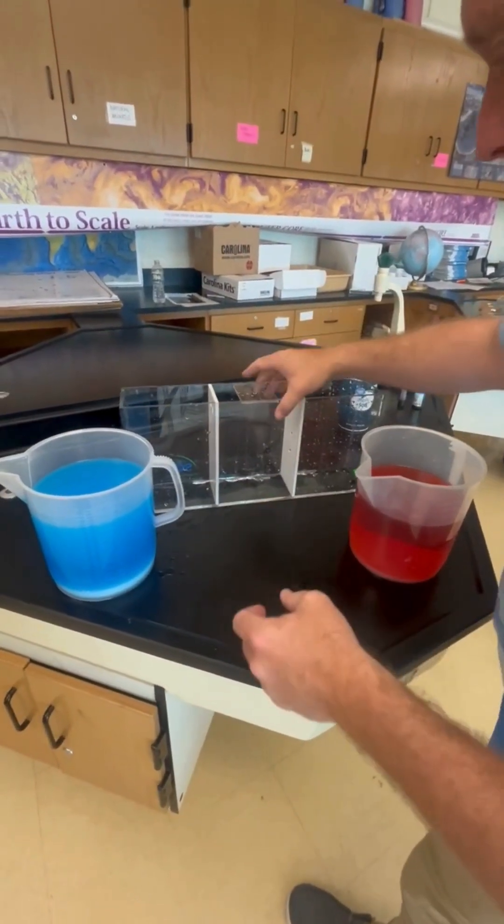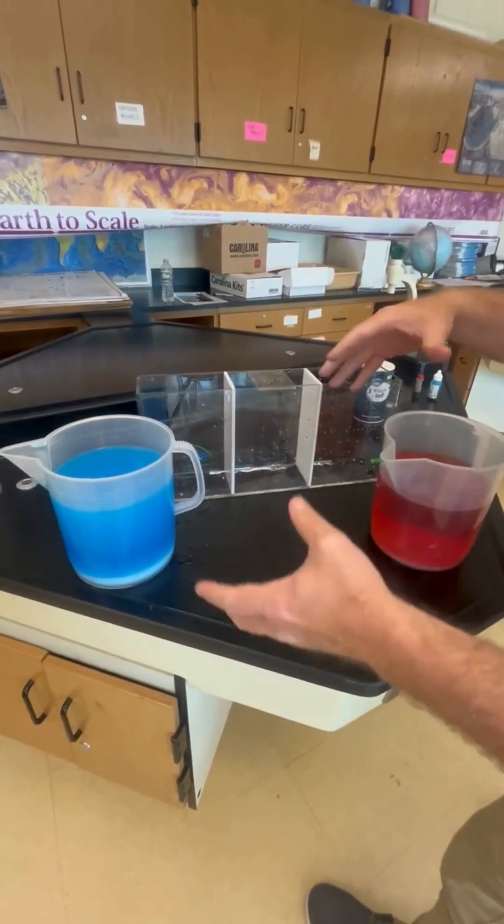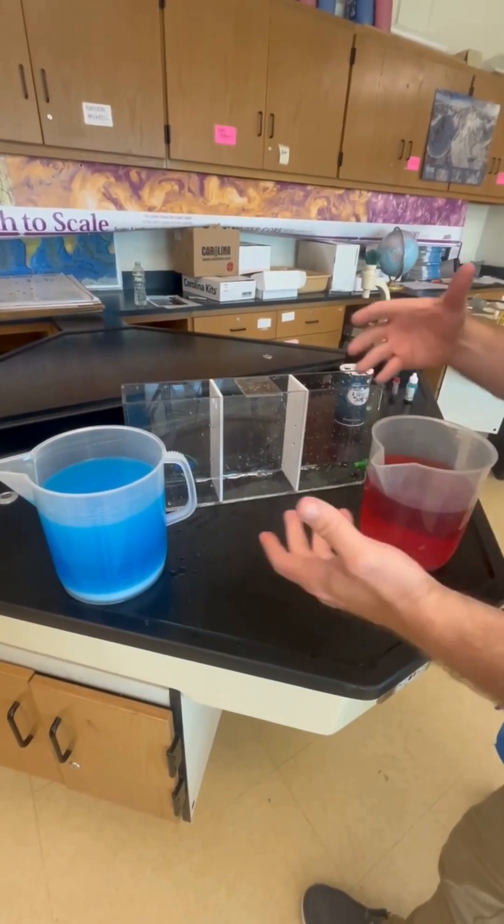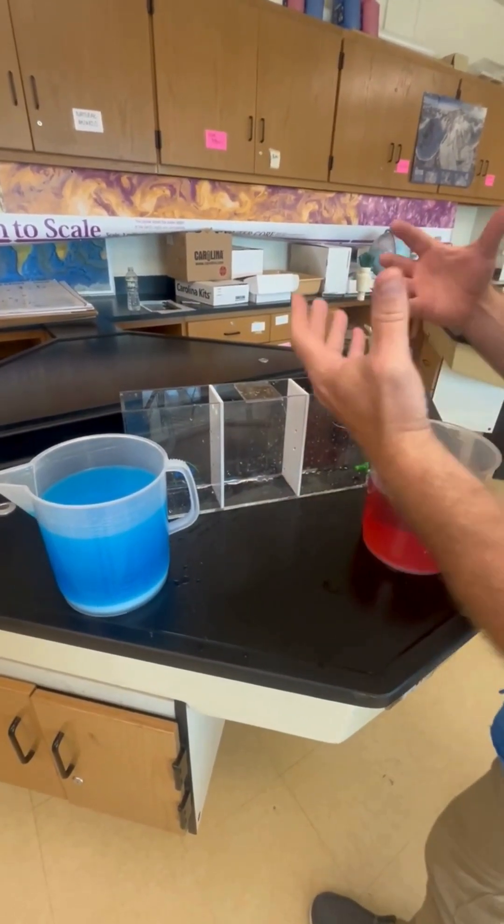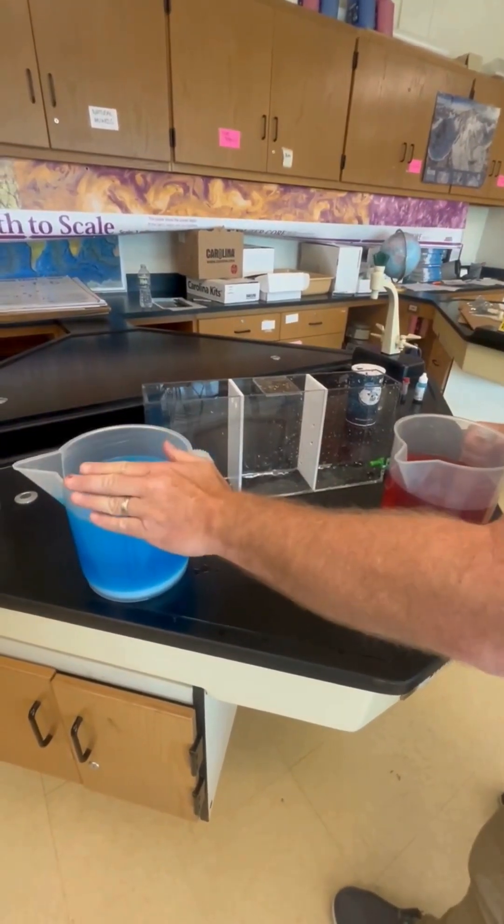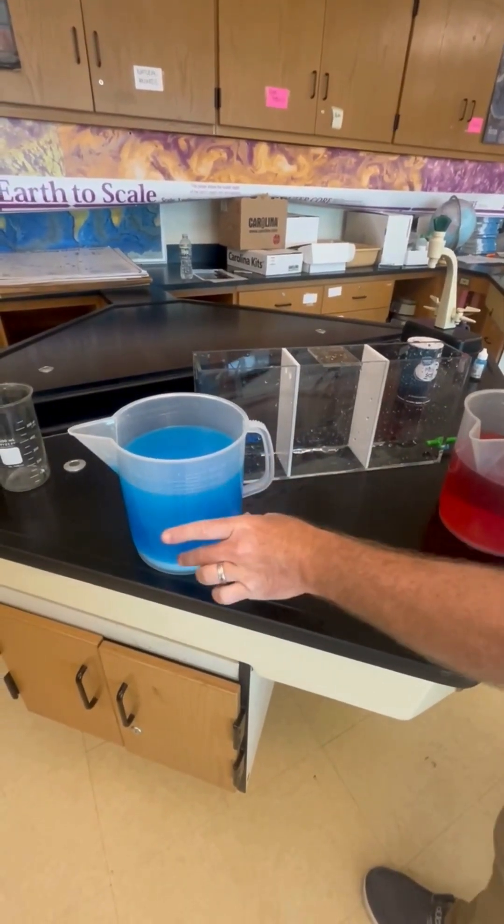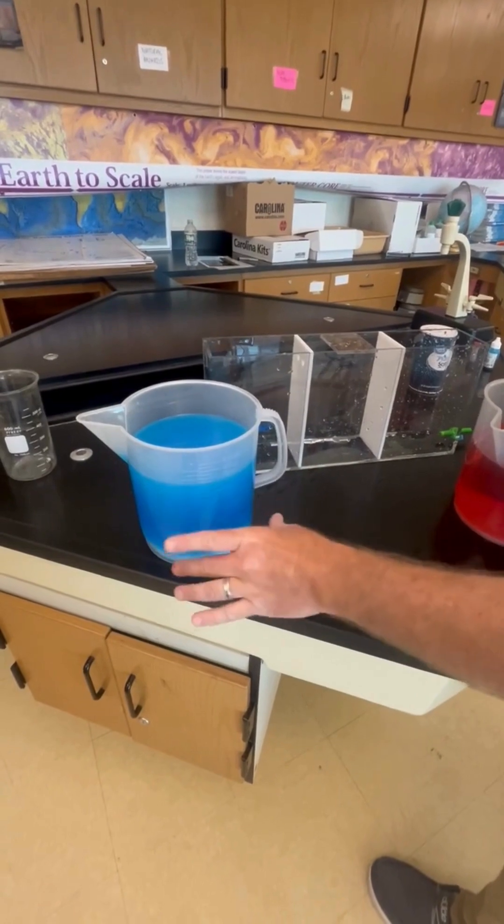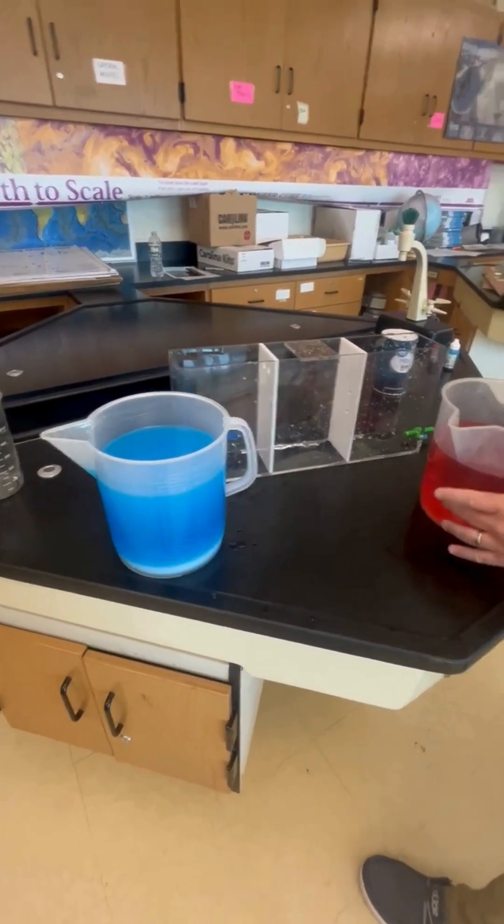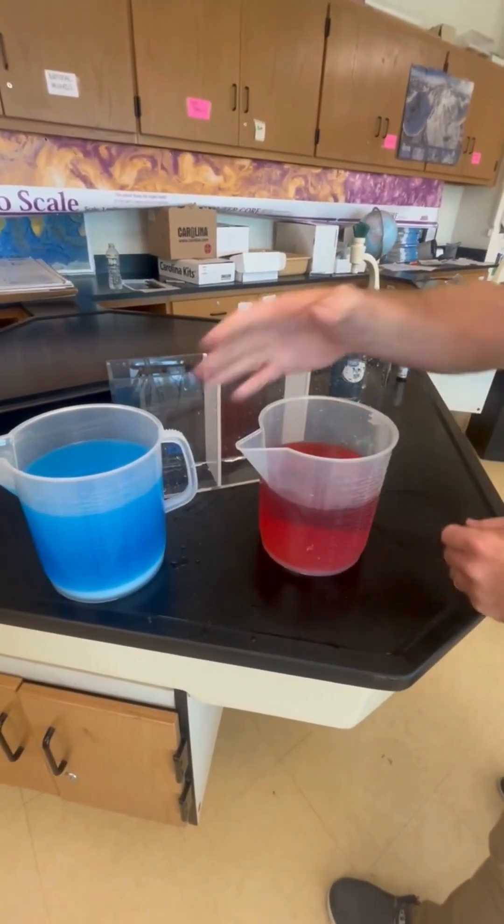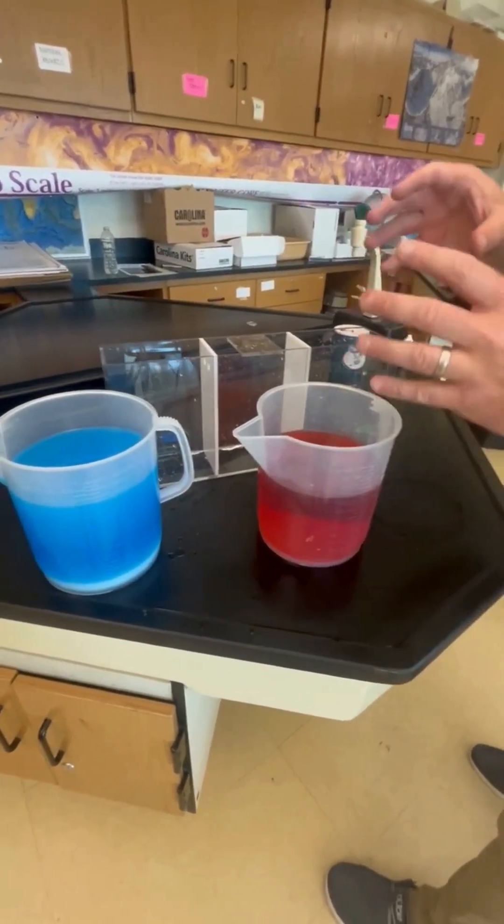Alright guys, we're here with oceanography, looking at ocean currents, ocean density, and salinity. This one has tons of salt, actually about 20% salt in this ratio of water. Both cold water, there's different colors to see - you've got the cold with salt and the cold without salt.